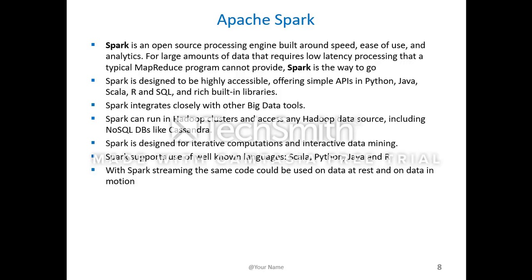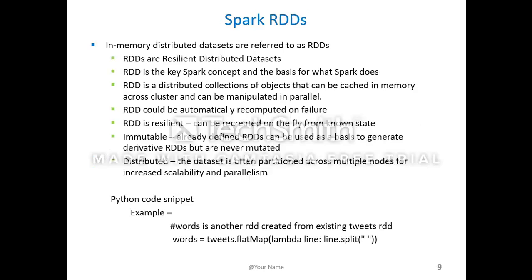RDD is a key Spark concept and basis for what Spark does. RDD stands for Resilient Distributed Dataset — it's a distributed collection of objects that can be cached in memory across a cluster and can be manipulated in parallel. RDDs can be automatically recomputed on failure. They are immutable; already defined RDDs can be used as a basis to generate derivative RDDs but are never mutated.